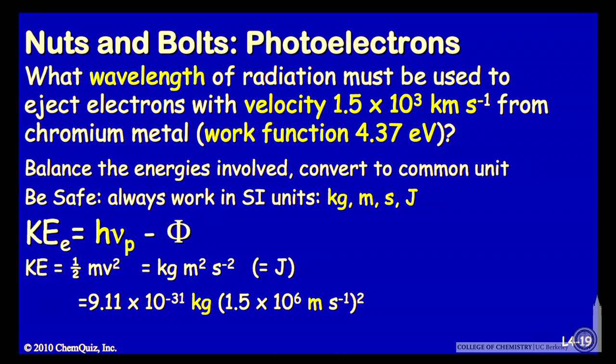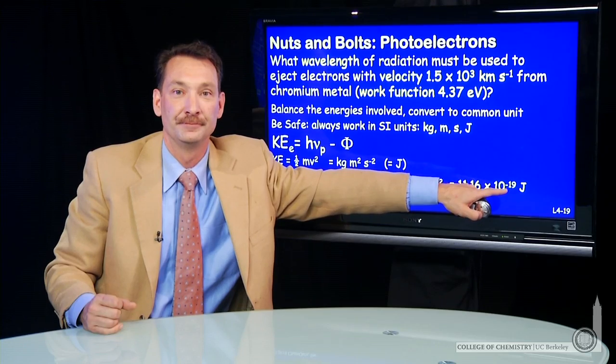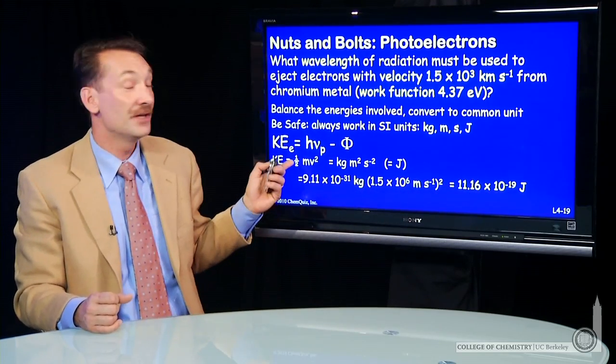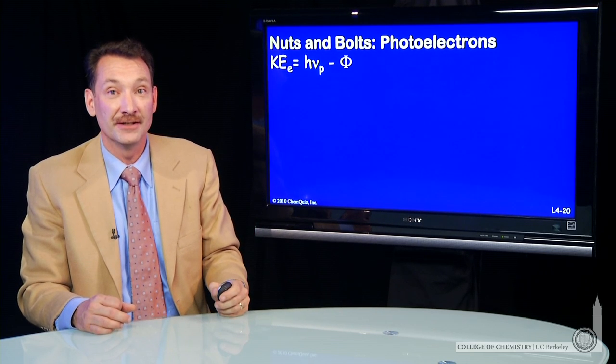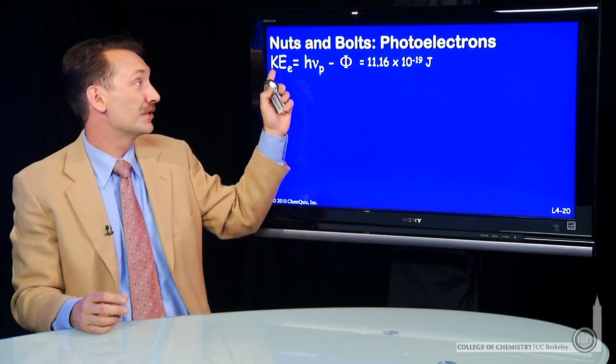So this has been pretty straightforward. We'll look up the mass of an electron, express it in kilograms, express our velocity. It was given in kilometers per second, but I'm going to convert it to meters per second to keep the units the same. Square that. That's relatively straightforward. 11.16 joules times 10 to the minus 19. Tiny, tiny, tiny number of joules. Of course, it's an electron.